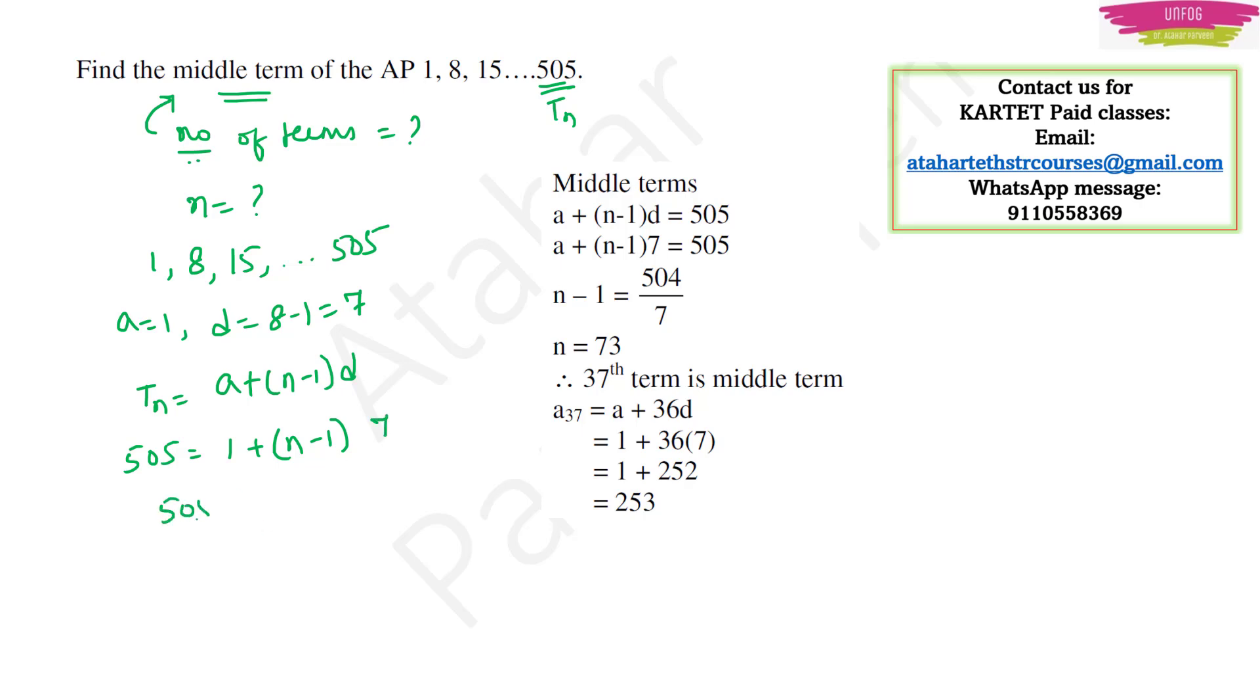So 505 I can send 1 on the other side. So I will get n minus 1 into 7 or n minus 1 into 7 is equal to 504 or n minus 1 is equal to 504 by 7 or n minus 1 is equal to 72.